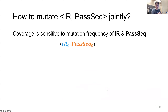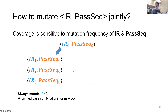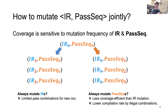Now we know how to mutate IR and pass sequences individually. Mutating pass sequences is simple — we just randomly generate a pass sequence. The next question is how to mutate them jointly, given that coverage has different sensitivity to each. If we always mutate IRs, only limited pass combinations are tried, compromising possible new coverage. On the other hand, if we only mutate pass sequences, this is less coverage-efficient because the IR side has a much larger search space. Additionally, randomly generated pass sequences may be illegal or make no sense, slowing down the process.